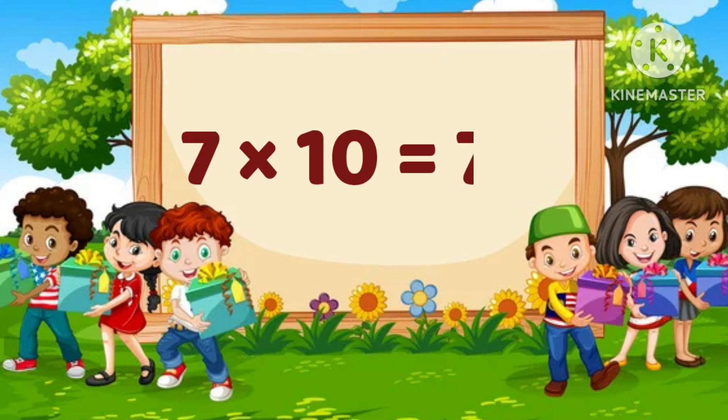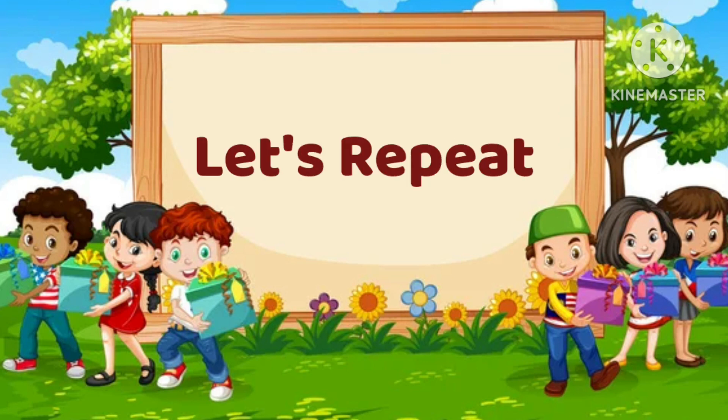7 times 10 is equal to 70. Now, let's repeat the table of 7.